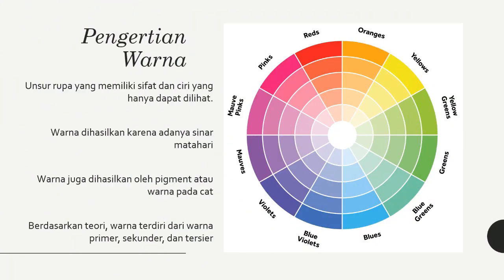Pengertian Warna. Secara ontologi, warna adalah salah satu unsur rupa yang secara kasat mata memiliki sifat dan ciri yang hanya dapat dilihat. Warna sendiri dihasilkan atas dua cara: yang pertama secara alami yaitu dari cahaya sinar matahari, yang kedua adalah pigment atau warna pada cat.